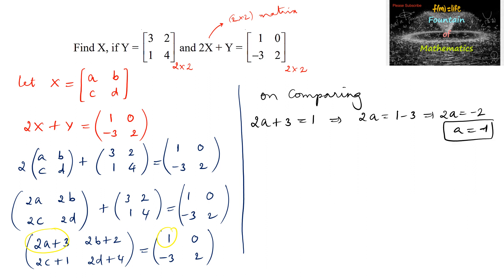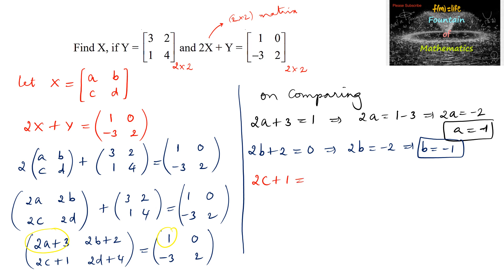We can write 2B plus 2 is equal to 0; upon simplifying, 2B is equal to negative 2, so B equals negative 2 divided by 2, which is negative 1. For C: 2C plus 1 is equal to negative 3, which implies 2C equals negative 4, so C equals negative 4 divided by 2, which is negative 2.